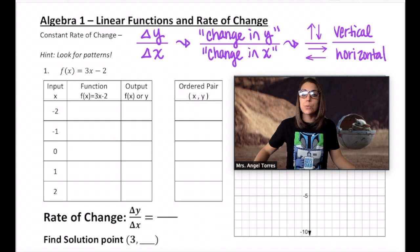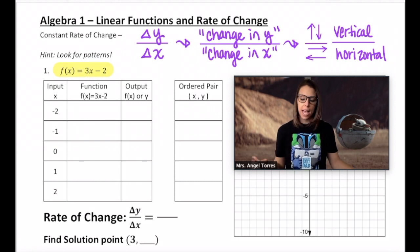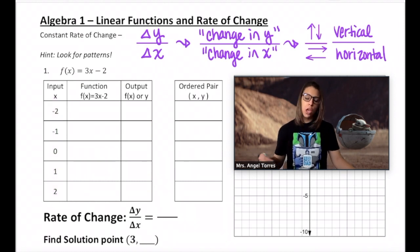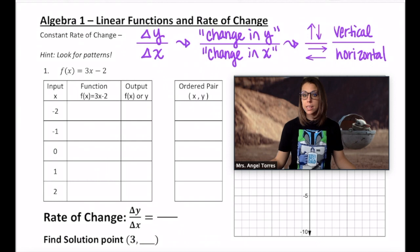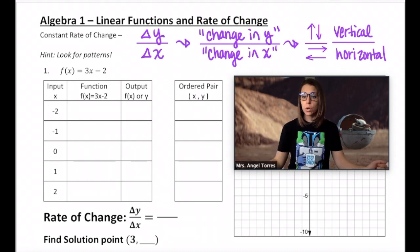So your change is basically how you get from one number to another. In a graph, that's represented vertically and horizontally. Your change in y is how far you're traveling up or down, and your change in x is how far you're traveling left or right. Now let's get into our function table. Our function is f(x) = 3x - 2, and the domain we're given is -2, -1, 0, 1, and 2.